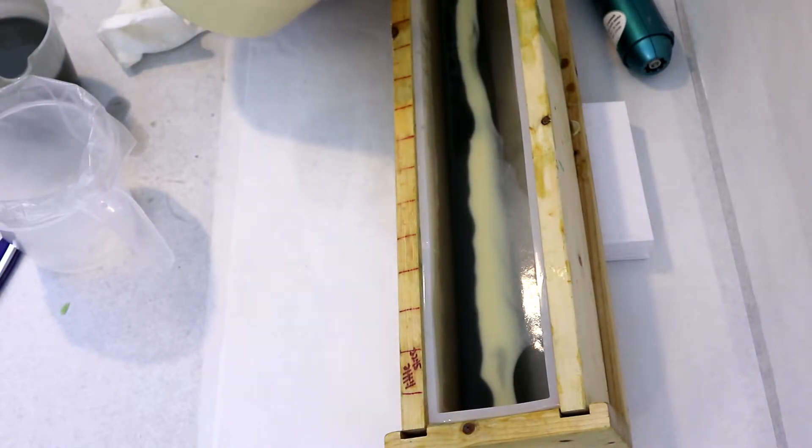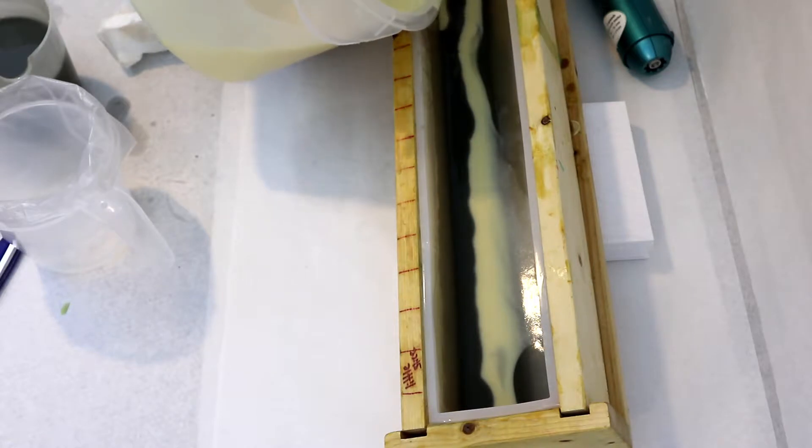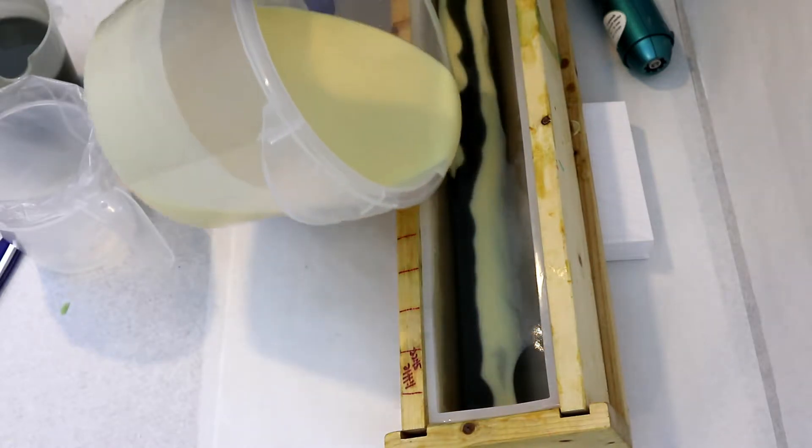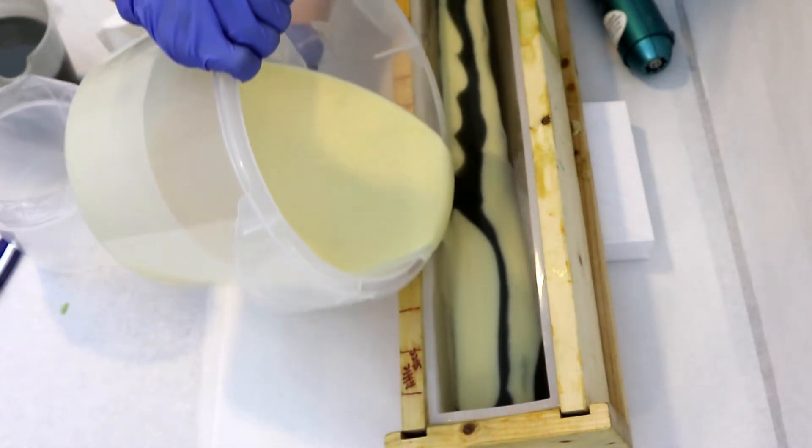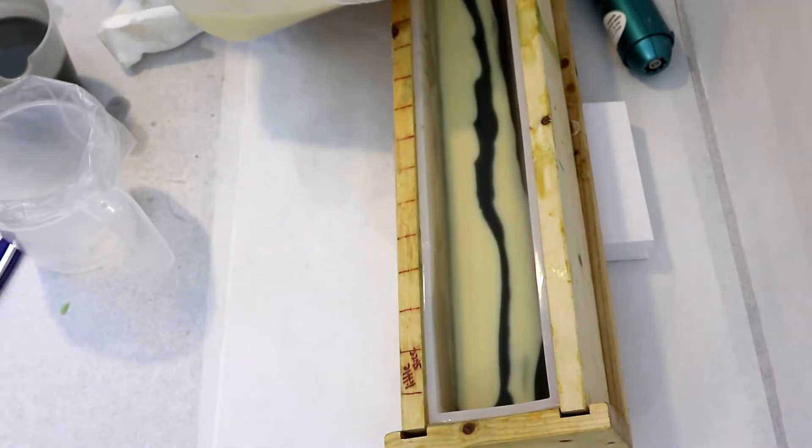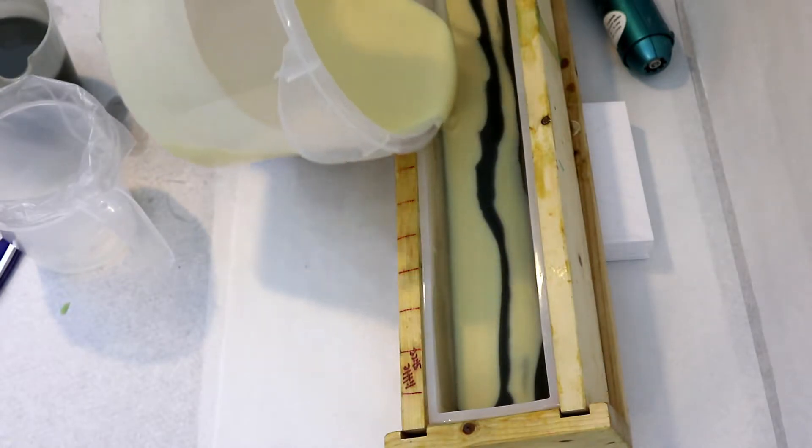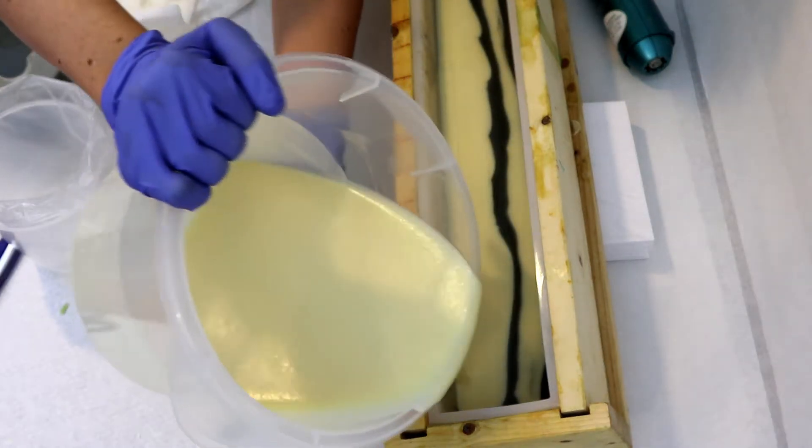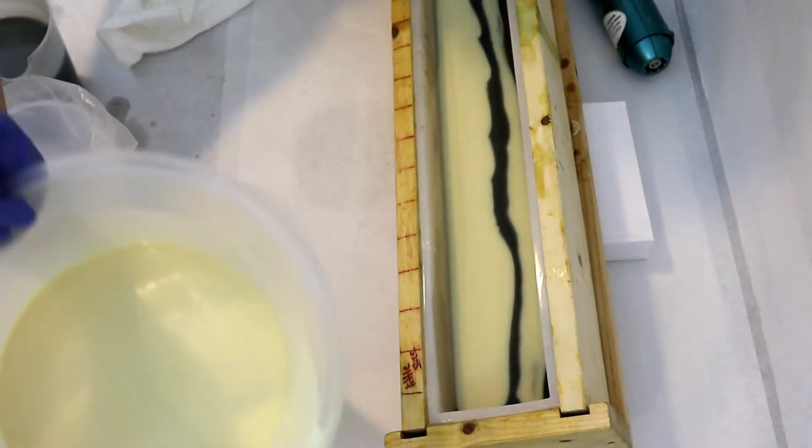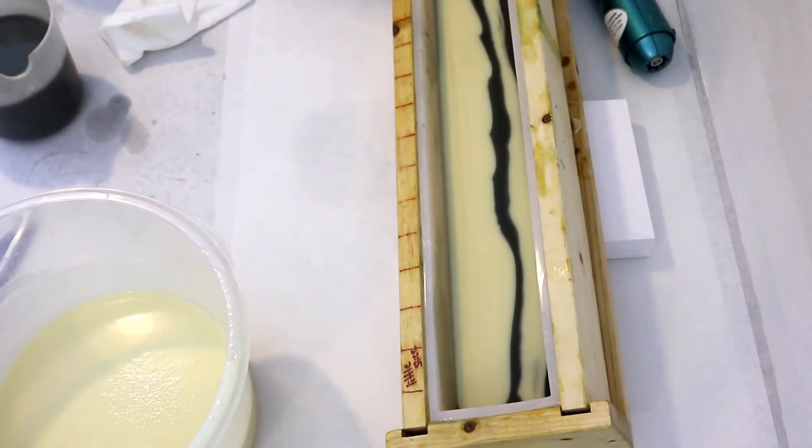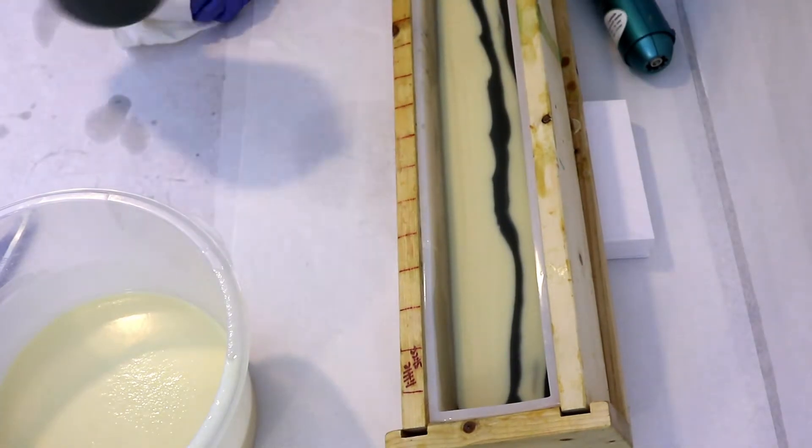So just alternate dark and light, dark and light. And then pretty soon we will have a stripey soap. So the difference between this and an in the pot swirl where you also can get a nice stripe effect, you have a lot more control over how thick your stripes are with a tiger stripe. In the pot swirl, you have pretty much no control at all. It's just you get what you get.